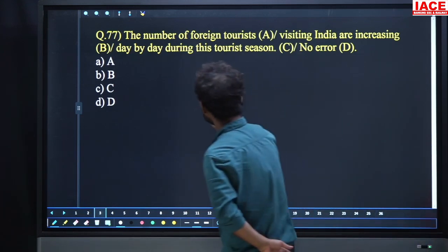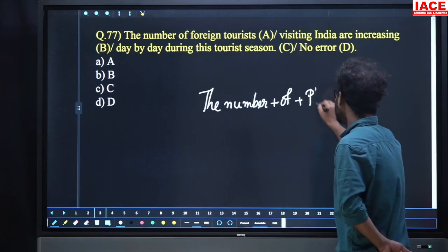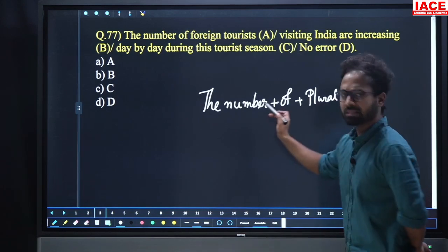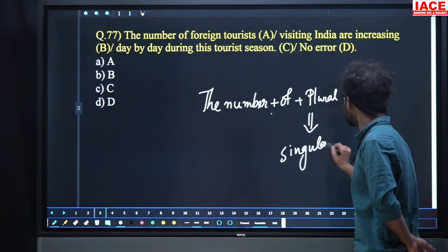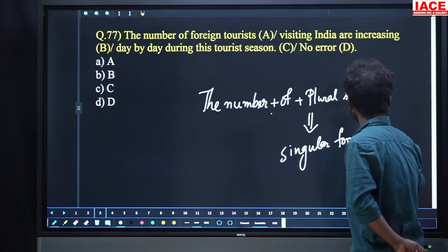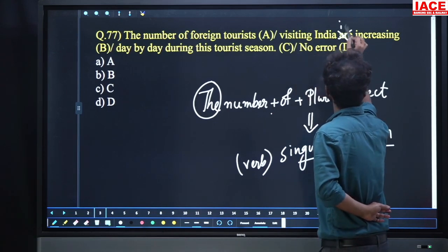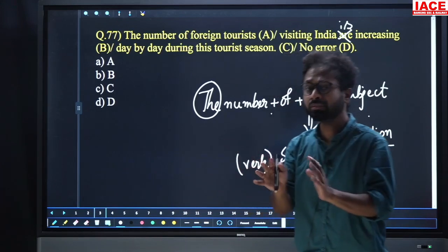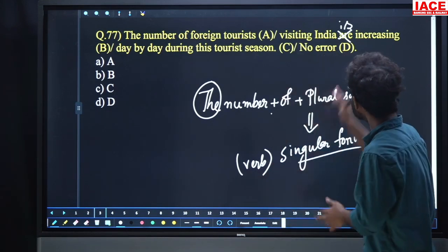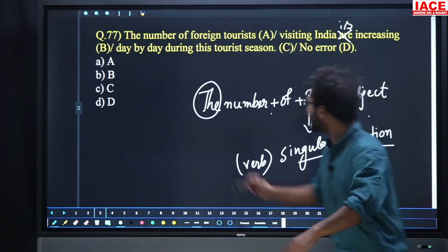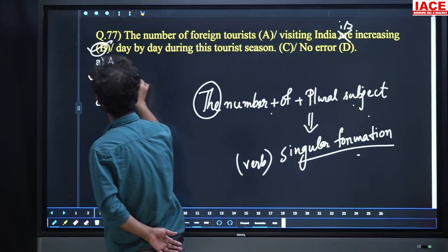Remember: 'The number of' plus plural subject — the verb should be in singular formation. So: 'The number of foreign tourists visiting India is increasing,' because when 'the number' is there, we are talking about the total or whole amount of something. That is why 'is' should be there. Problem is in part B. Option number B is our answer.